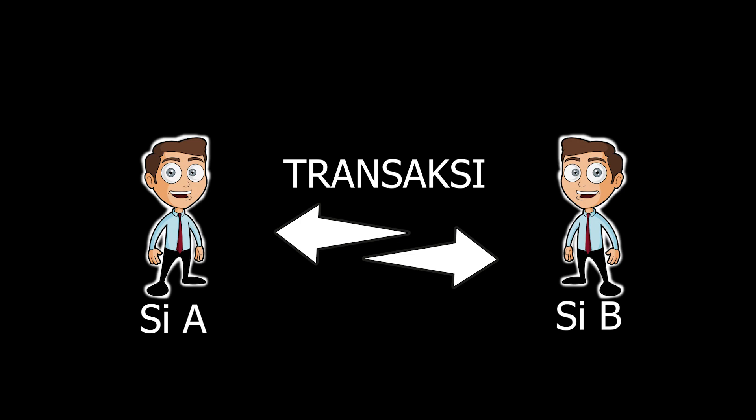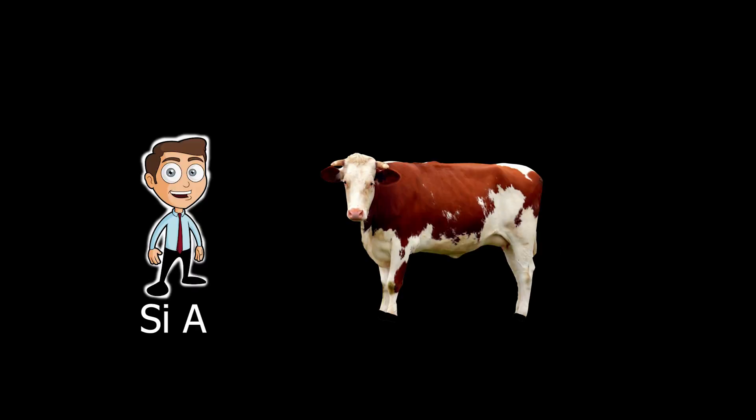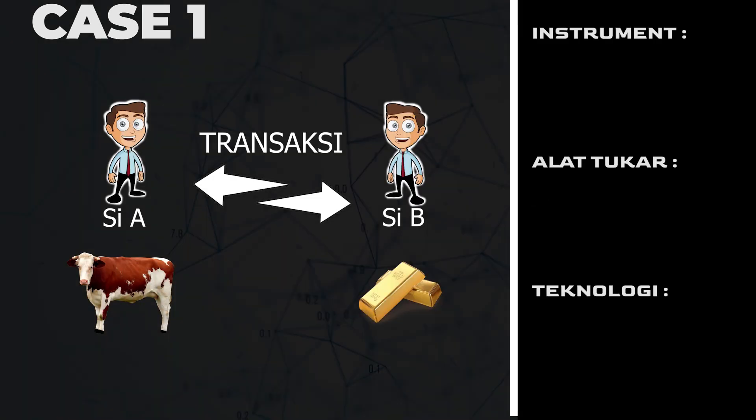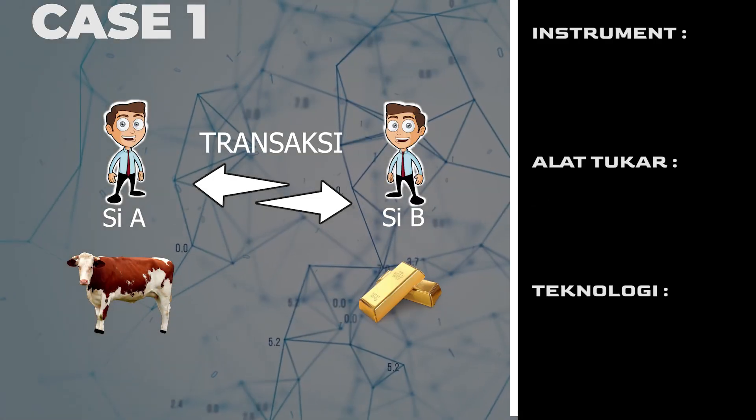Sekarang kita mempelajari bagaimana komparasinya. Ada si A dan B ingin melakukan transaksi. Si A memiliki seekor sapi yang ingin dijualnya. Untuk kasus pertama,